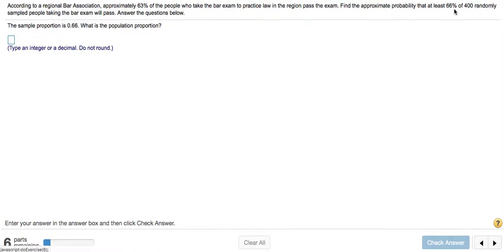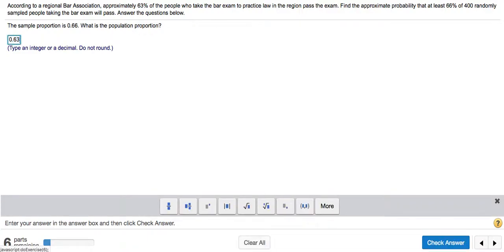So this 66% here, or 0.66, is the sample proportion, but what is the population proportion? That is going to be this value right here. So 63% as a decimal is 0.63.